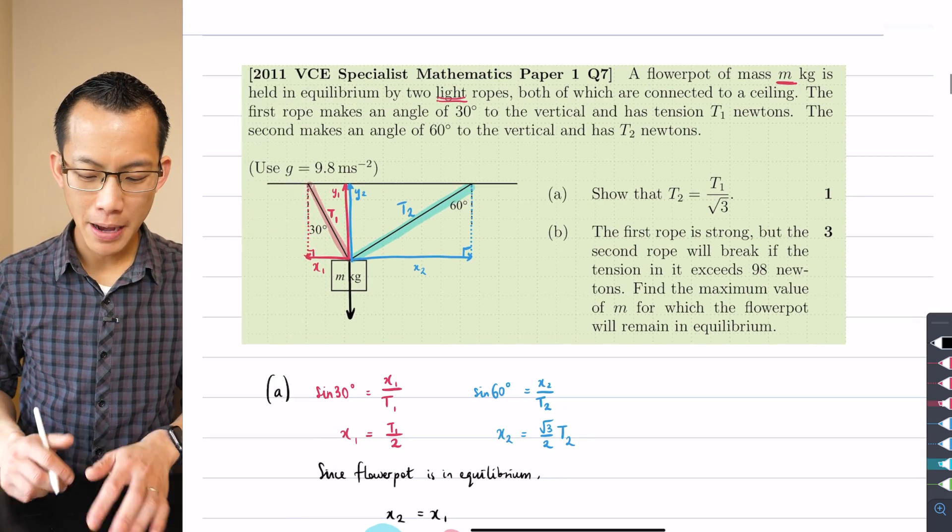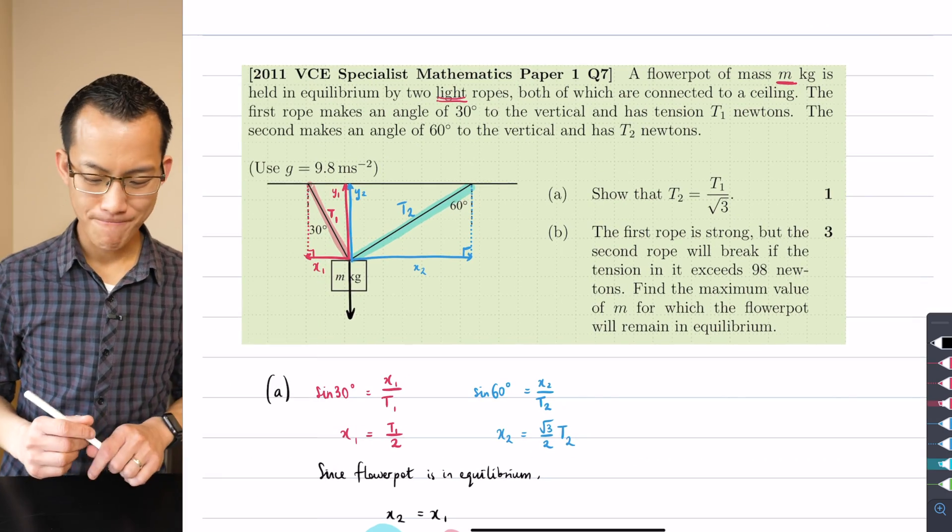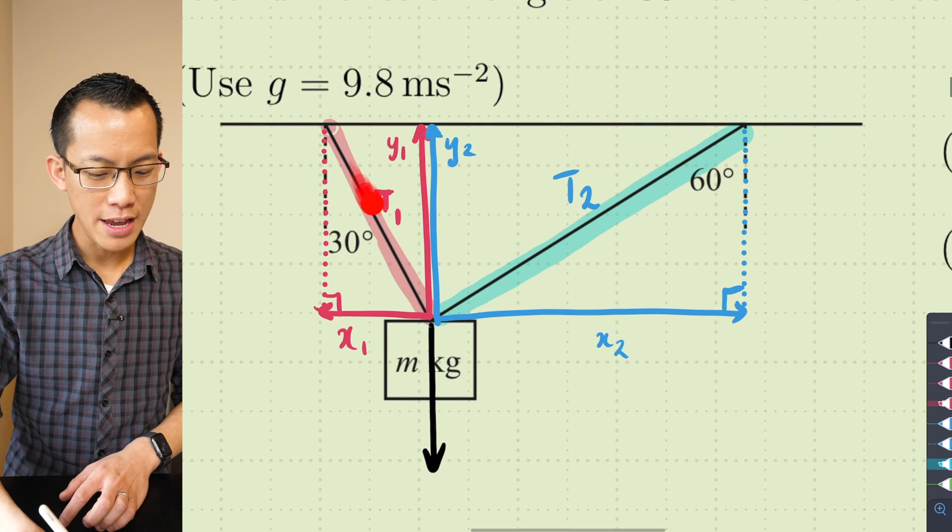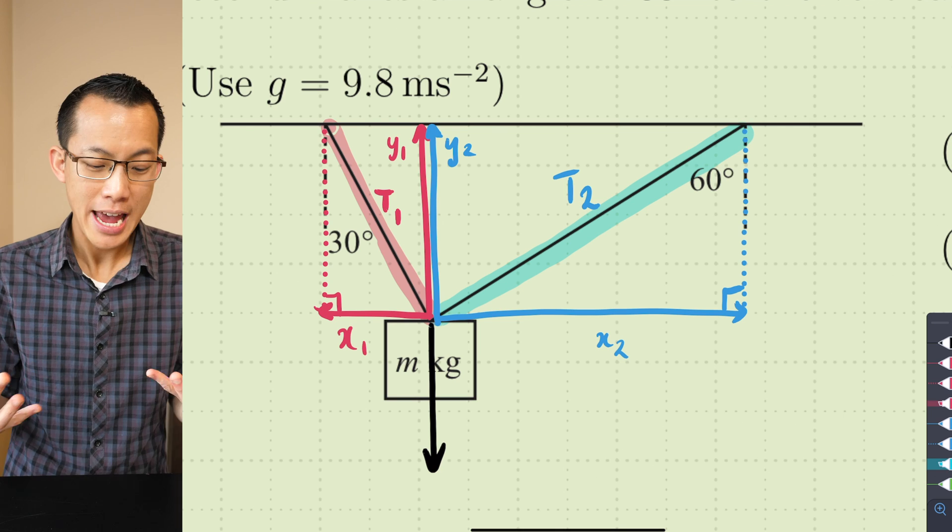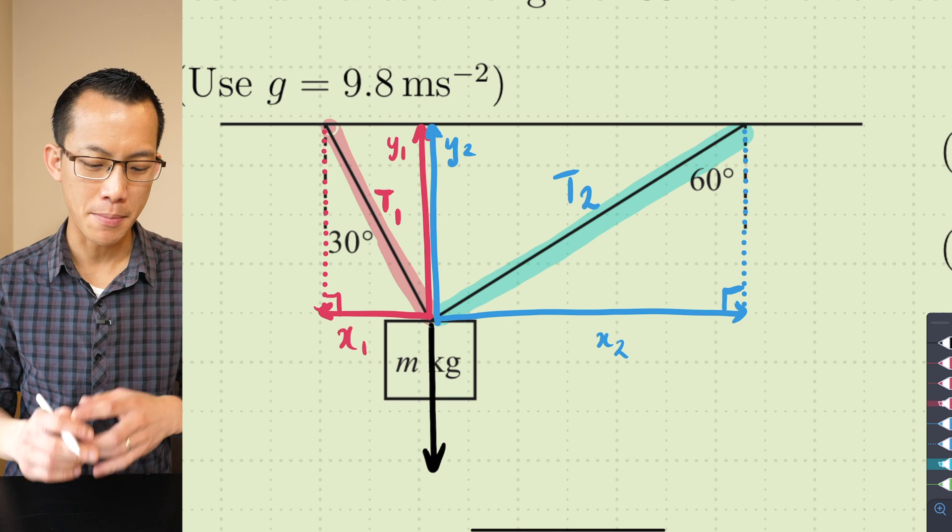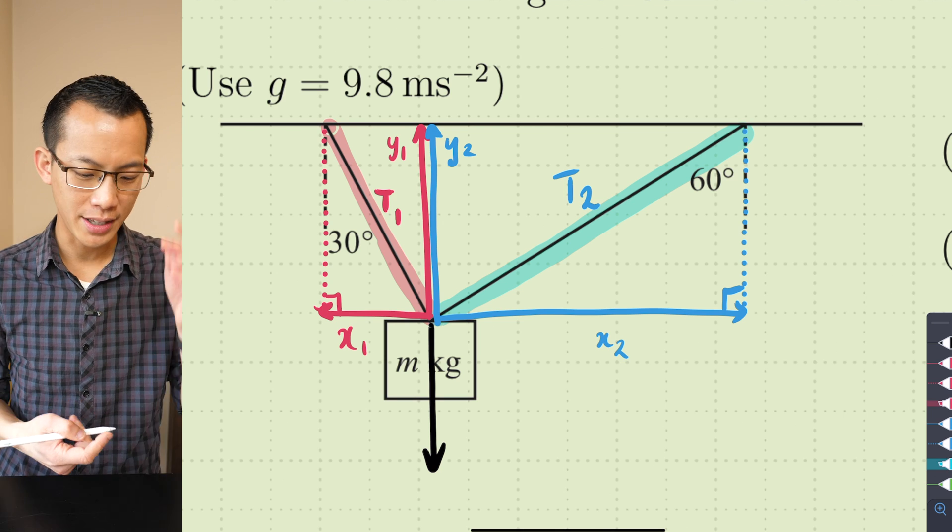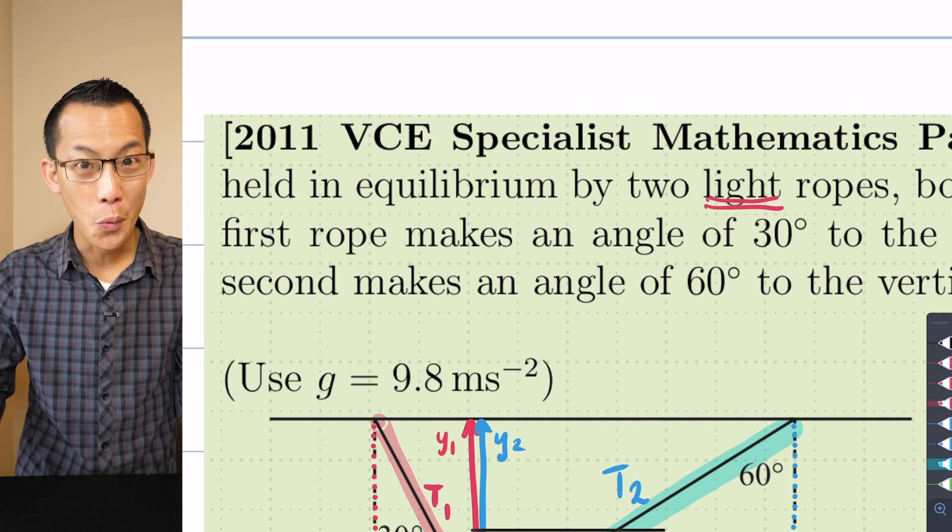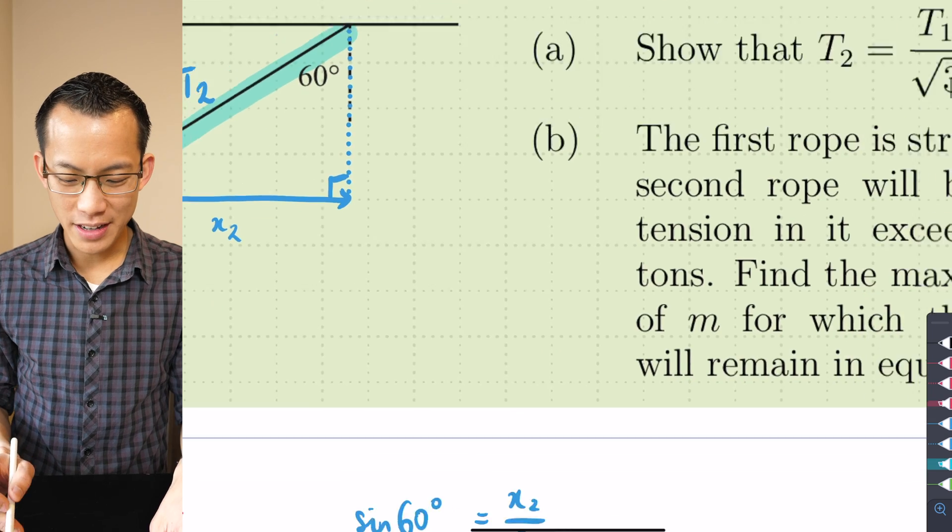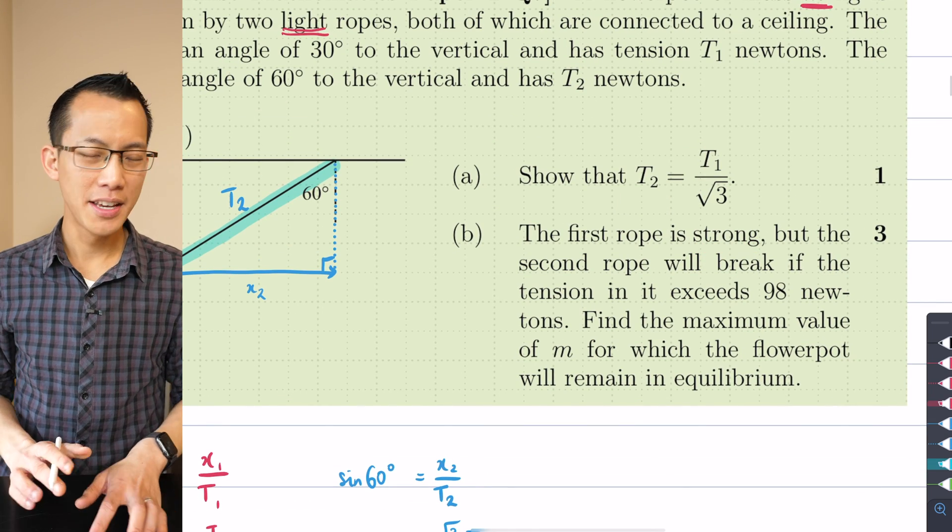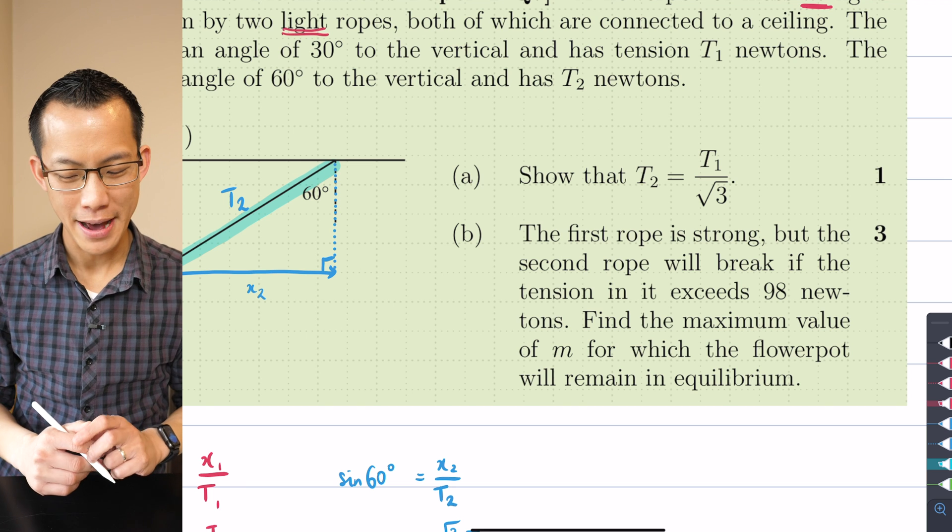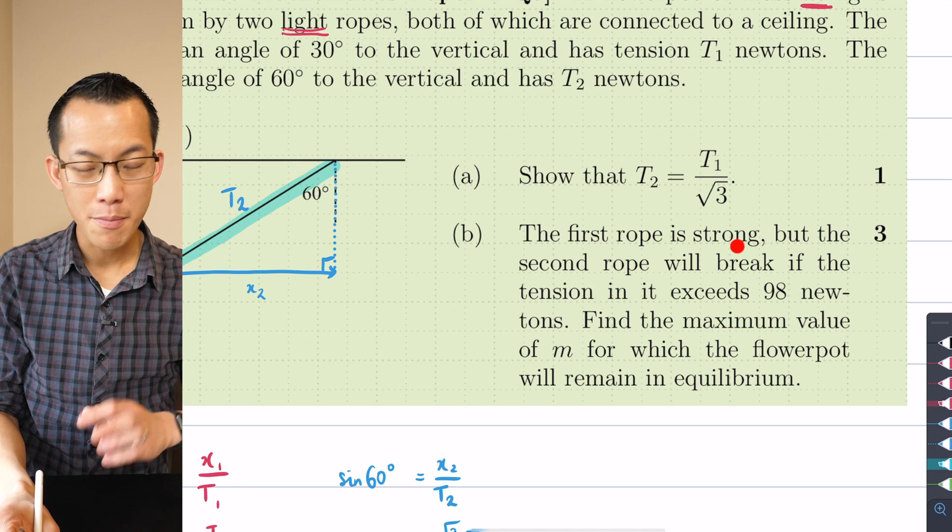So now when we go further it says part B, the first rope is strong. What does that mean? Well the whole idea here is that this tension, if it exceeds a certain amount it'll snap. It only has a certain capacity, but what the question is telling us, in much the same way that the word 'light' means there's no weight that you need to worry about, the word 'strong' here indicates it's got infinite tension. It's got so much tension you don't need to worry about it. So therefore, the first rope I can disregard.